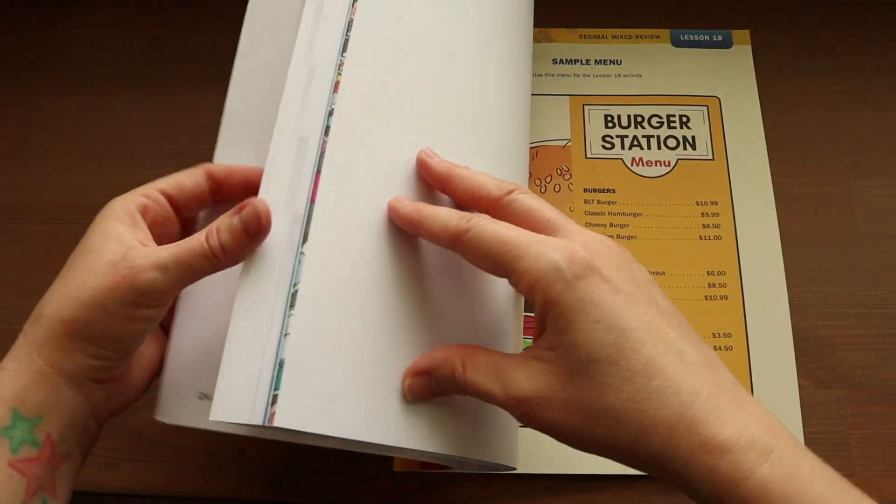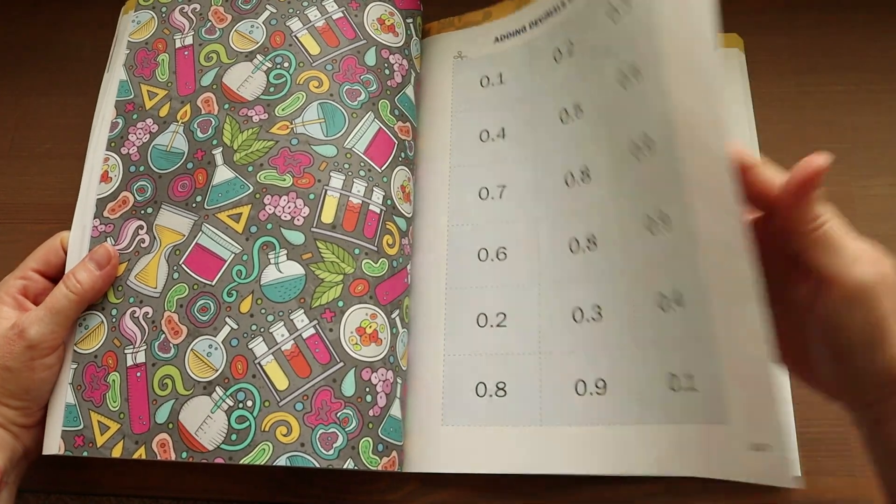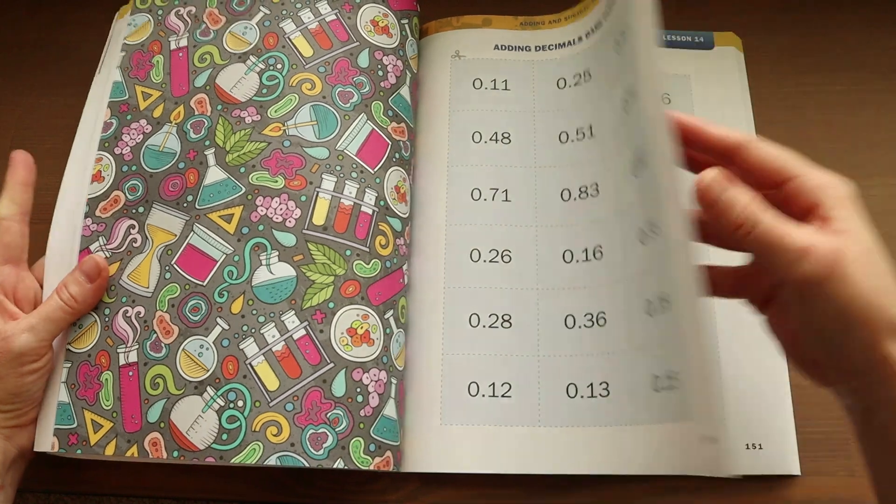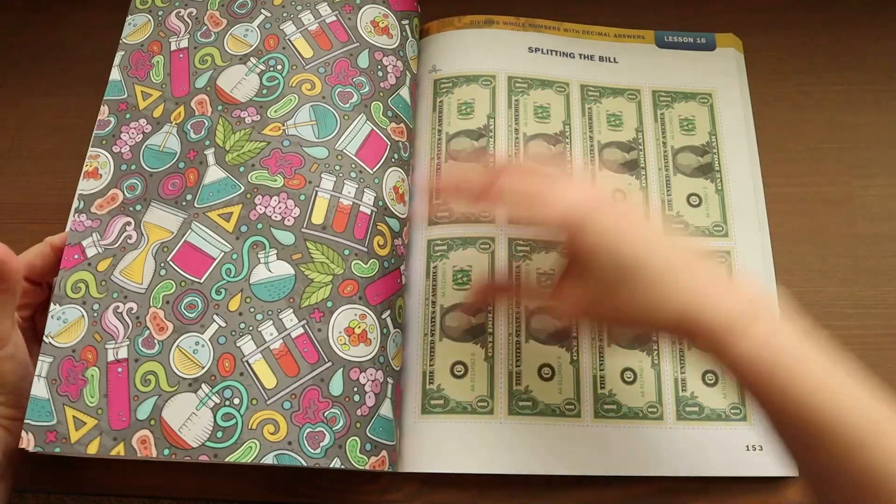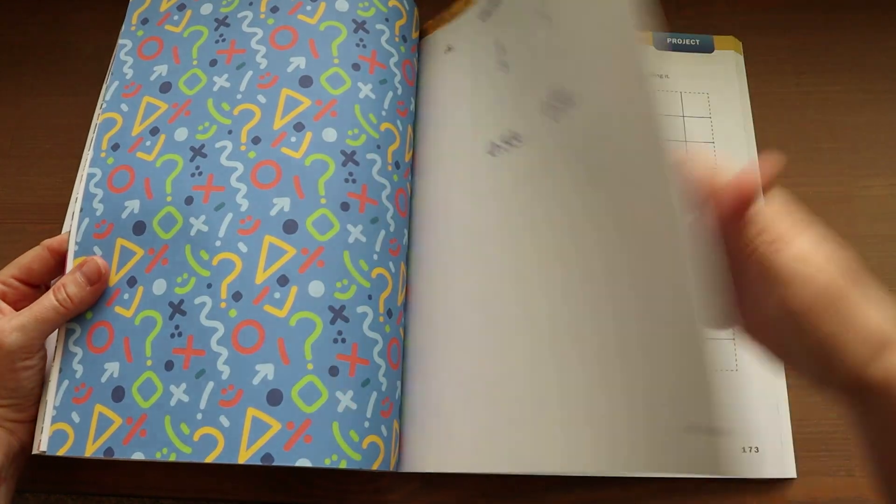And then towards the end of the book, you will have your activity sheets and these can be ripped out, cut, and then your child can use those for the activities and games that they are going to play throughout the year.